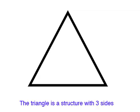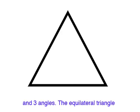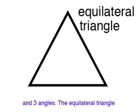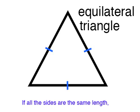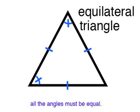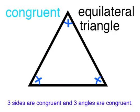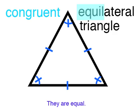The triangle is a structure with three sides and three angles. The equilateral triangle means that all the sides are the same length. If all the sides are the same length, all the angles must be equal. Three sides are congruent and three angles are congruent. They are equal!